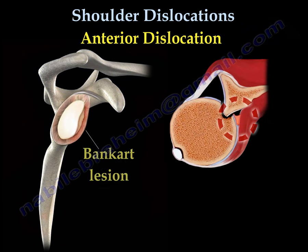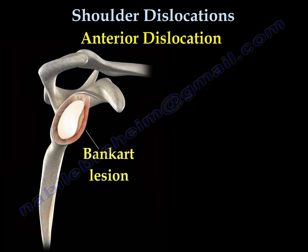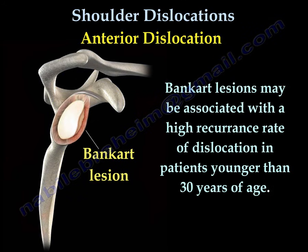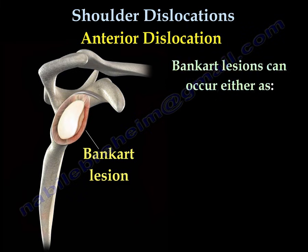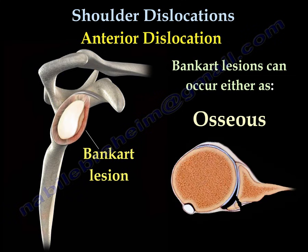Bankart lesion is a tear of the anterior inferior labrum of the glenoid rim. Bankart lesion may be associated with a high recurrence rate of dislocation, especially in patients younger than 30 years of age. Bankart lesion can occur either as fibrous or bony.